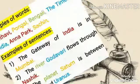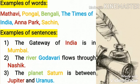Examples of proper noun words: Madhavi, Pongal, Bengali, The Times of India, Annapark, Sachin and May. These words refer to proper nouns.